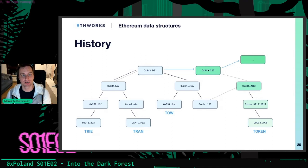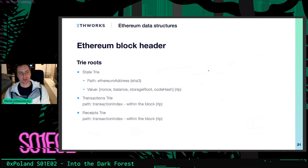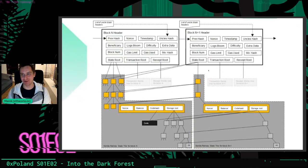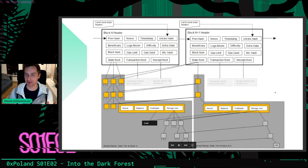This is pretty efficient in terms of memory — compared to, say, copying the entire structure on every version update. So why are we talking about all these complex data structures? It turns out Ethereum stores pretty much everything in Merkle Patricia trees. There is a state tree storing all variables in all smart contracts, a transaction tree storing all transaction data, and a receipt tree storing all execution results for every transaction.